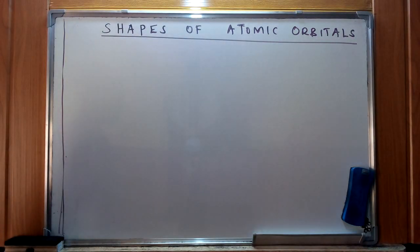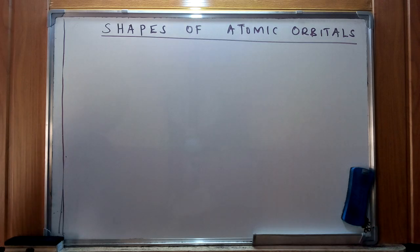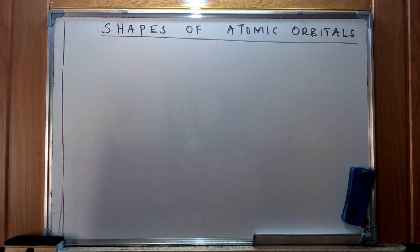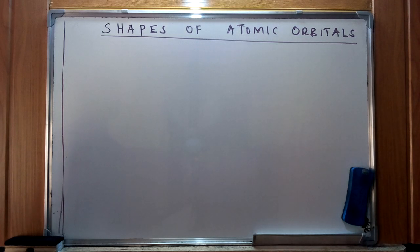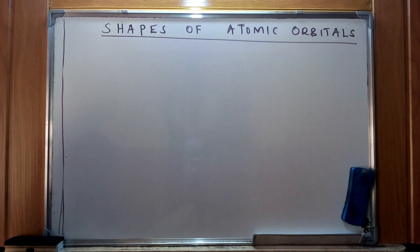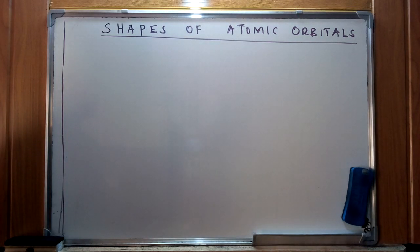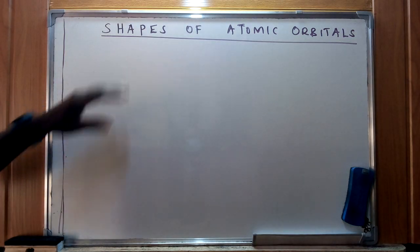Hi guys, I'd like to welcome all of us to our channel, Honest Sciences and Mathematics TV Channel. Today we are going to look at the shapes of atomic orbitals, and this is basically a follow-up from our previous discussion on the quantum mechanical model of an atom, where we saw that different scientists contributed to this idea in a historical context.